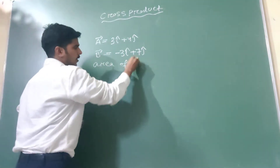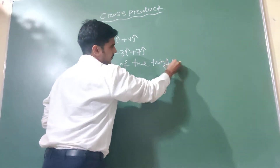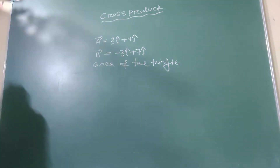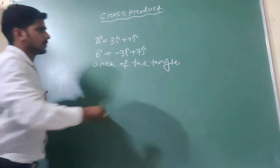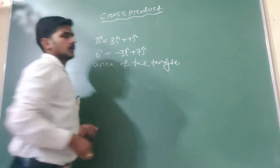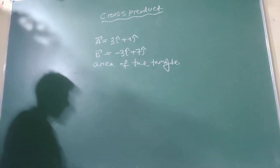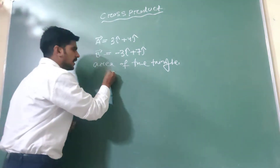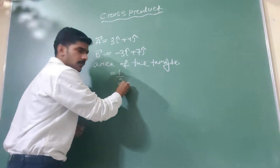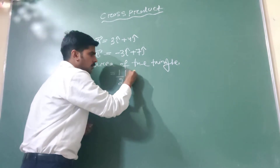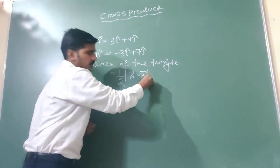To calculate the area of the triangle, we know the formula is half into the magnitude of A vector cross B vector. So first find A vector cross B vector, then find the magnitude.